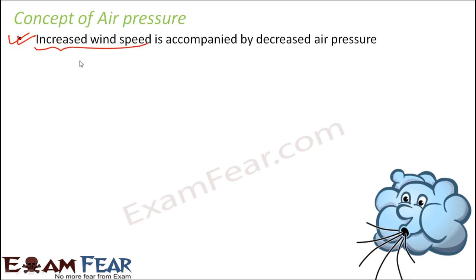So when I say increased wind speed, I basically mean the air particles are moving faster — that is the increased wind speed. Where those particles move very fast, it causes a decrease in air pressure. You might be wondering how speed is related to pressure.